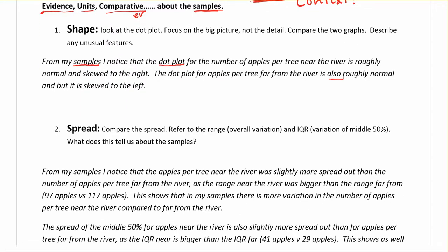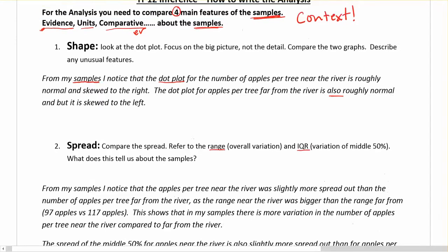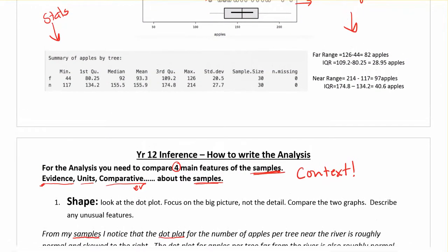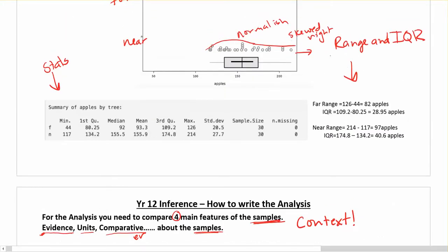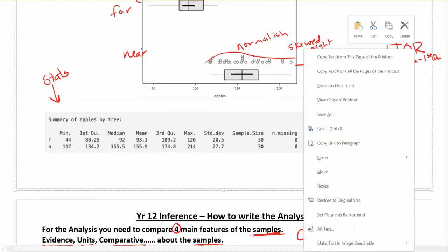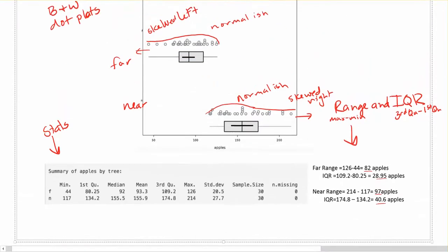My second one is all about the spread. Spread is going to describe our variation. The things we're going to look at for spread are going to be your range and your IQR, which is why it's important to calculate them. Remember that your range is always max minus min, and your IQR is going to be the third quartile minus the first quartile. When I've calculated these, I notice that my range for far is 82 and the range for near is 97, and my IQR is roughly 29 and roughly 41.